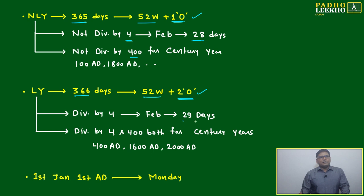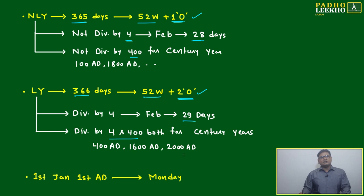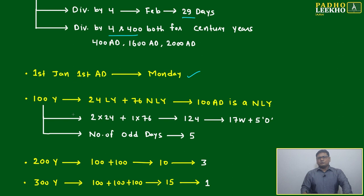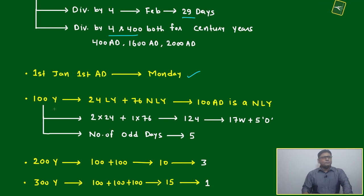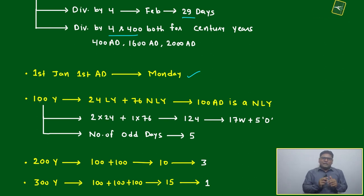Leap year is divisible by 4, February has 29 days. For century years, it must be divisible by both 4 and 400 — for example 400, 800, 1600, 2000. January 1st, 1 AD being Monday is our base assumption; all calculations depend on this.